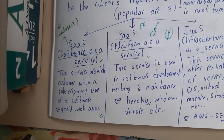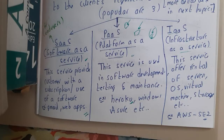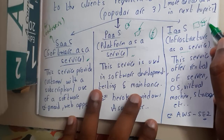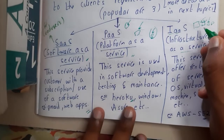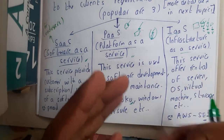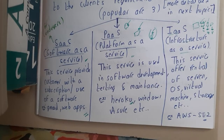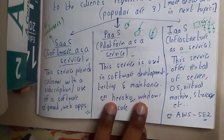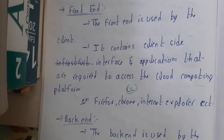Infrastructure as a Service — assume you want to test an application with various systems. You want iOS for one system and Windows for another, and you need specific RAM — 2GB for this, 4GB for that, 8GB for another. For those kinds of requirements, you will use a service provider called IaaS — Infrastructure as a Service. This service offers a rental of servers, operating systems, virtual machines, storage, etc. The best example is AWS.